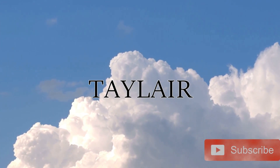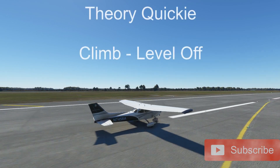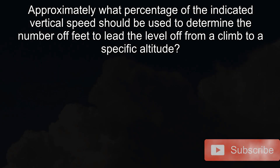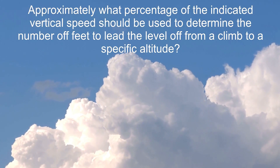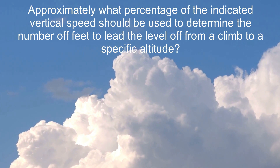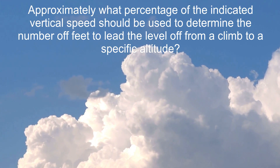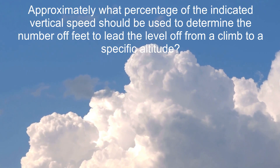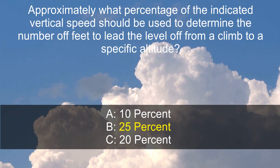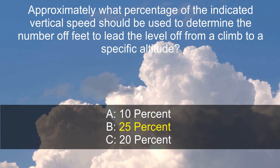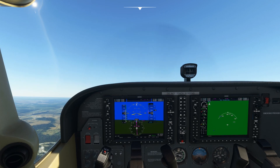Hi guys, welcome back to Taylor. It's time for another theory quickie. Here's a question from the FAA database: approximately what percentage of the indicated vertical speed should be used to determine the number of feet to lead the level off from a climb to a specific altitude? A: 10%, B: 25%, or C: 20%?